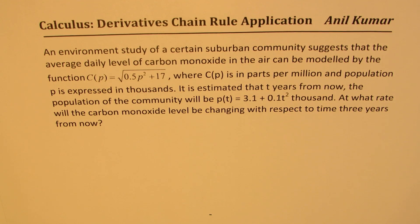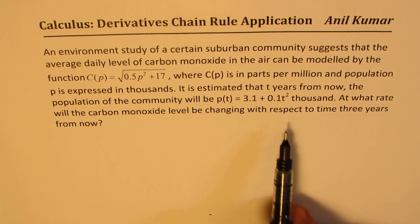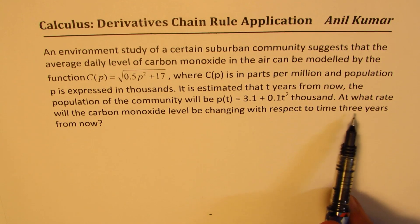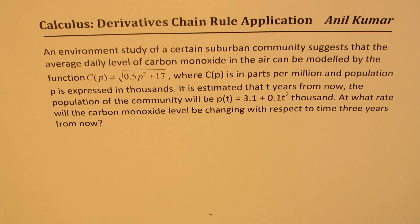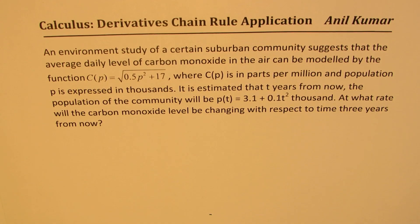It is estimated that t years from now, the population of the community will be p(t) = 3.1 + 0.1t² thousand. At what rate will the carbon monoxide level be changing with respect to time three years from now? You can always pause the video, answer the question and then look into my suggestions.